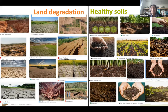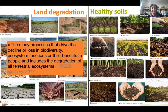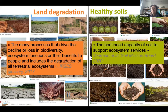Of course, arid conditions, desertification, and erosion are strongly represented with land degradation. Indeed, land degradation encompasses the many processes that drive the decline or loss in biodiversity, ecosystem functions, or their benefits to people, and includes the degradation of all terrestrial ecosystems, as defined by IPBES. Soil health is the continued capacity of soil to support ecosystem services.